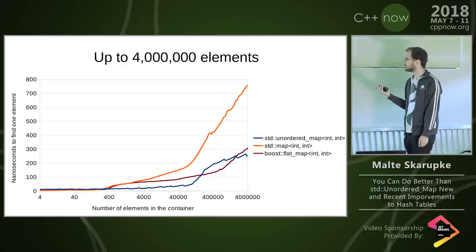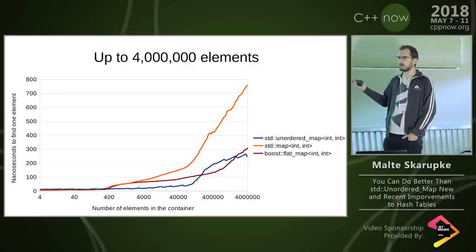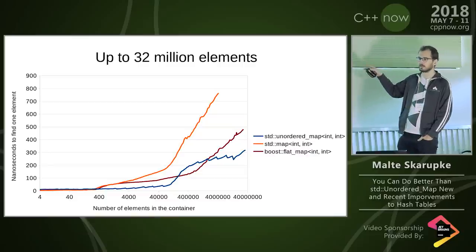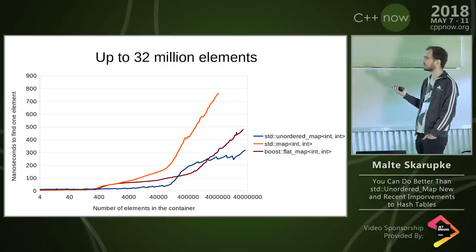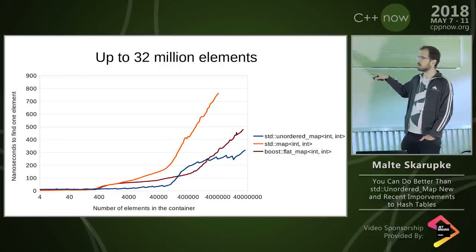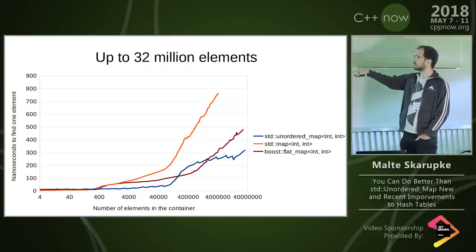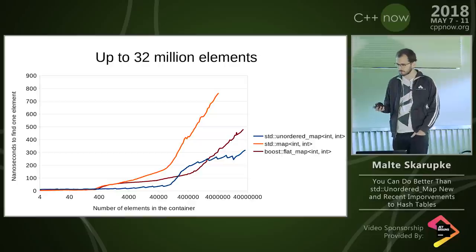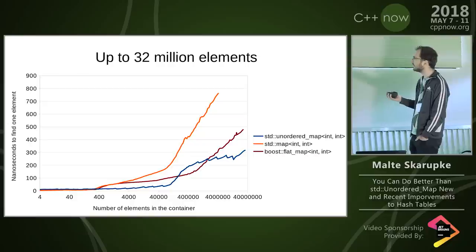If you zoom out again, flat_map gets slower once it also no longer fits in cache. Zooming out a final time, std::map and flat_map keep getting slower as they grow, while unordered_map stays mostly constant, hovering around 300 nanoseconds in the long term. So we saw two problem areas: unordered_map is slower than std::map when very small, and slower than boost::flat_map at a mid-range size.